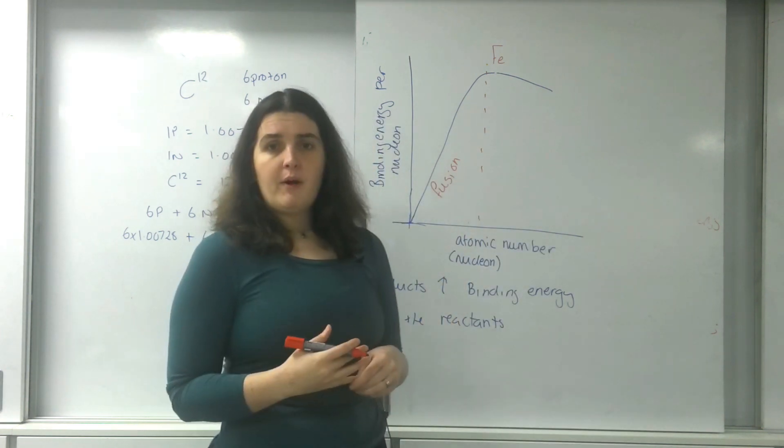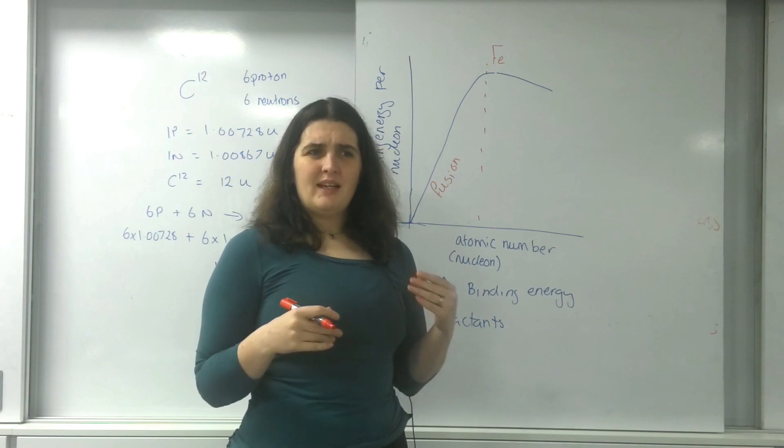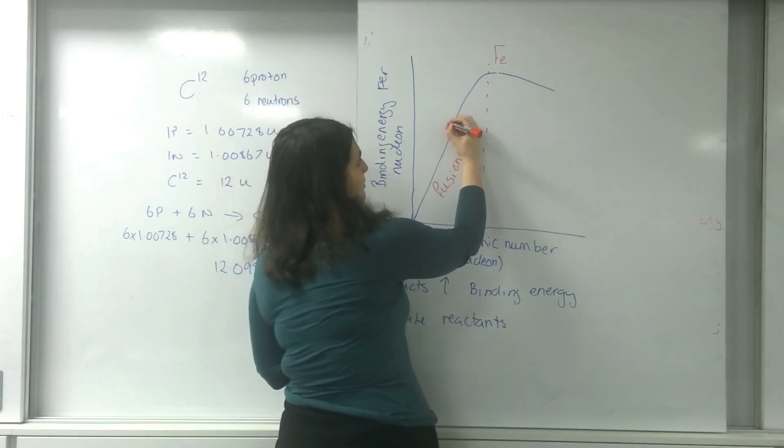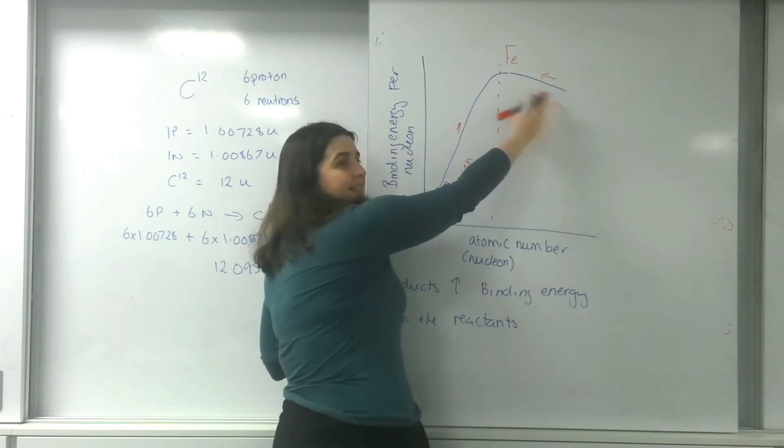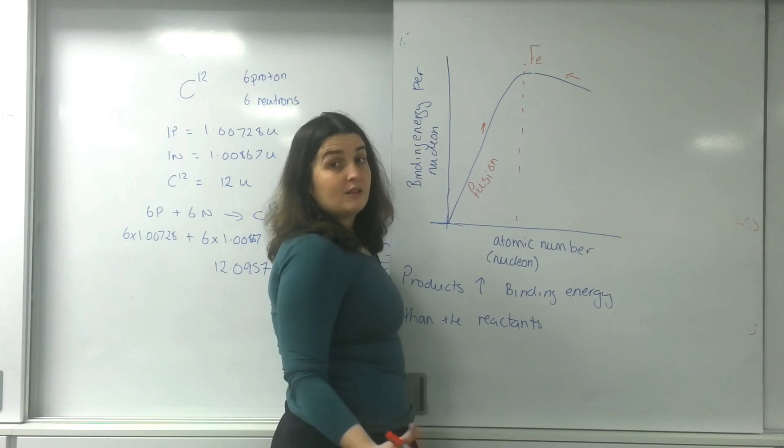After iron, the only way you get a higher binding energy is not by increasing the amount of atoms, but by decreasing the amount of atoms and nucleons, which means nuclear fission.